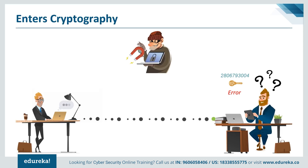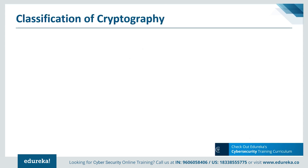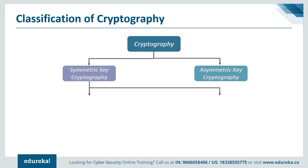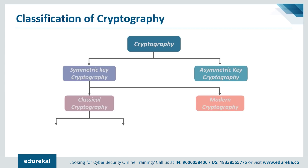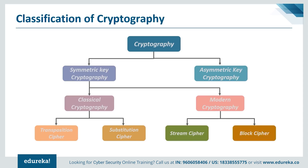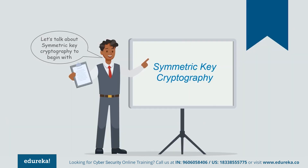Based on the type of keys and encryption algorithms, cryptography is broadly classified into two categories: symmetric key cryptography and asymmetric key cryptography, also known as public key cryptography. Symmetric key cryptography is further classified as classical cryptography and modern cryptography. Classical cryptography is divided into transposition cipher and substitution cipher, while modern cryptography is divided into stream cipher and block cipher.